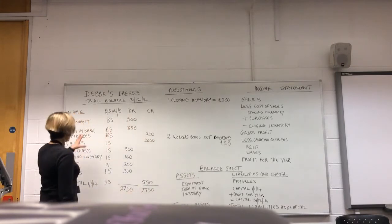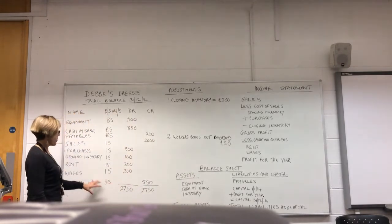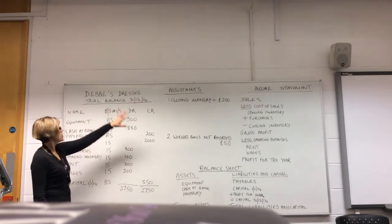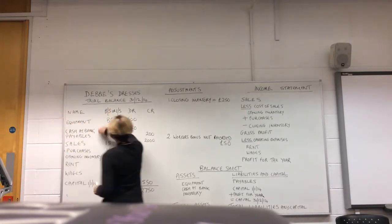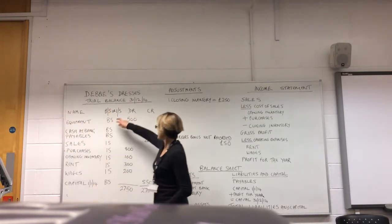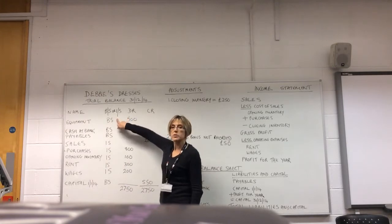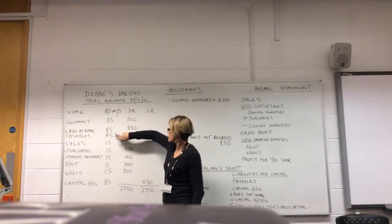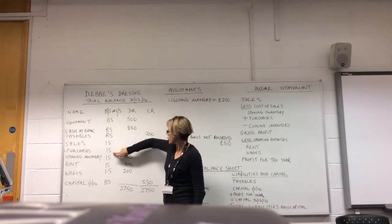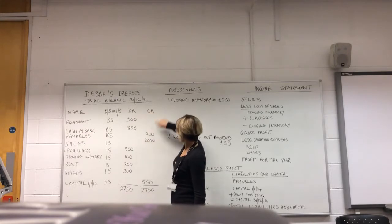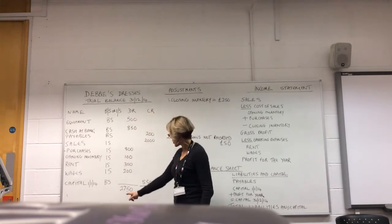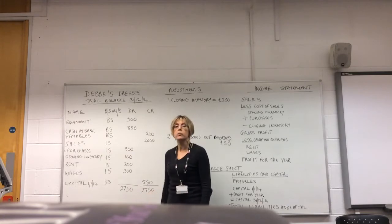So I've got a very simple trial balance here. It's got the account names, I've identified here whether it's a balance sheet or an income statement item, the debits, the credits, and you can see that my trial balance — the total of my debits is equal to the total of my credits.